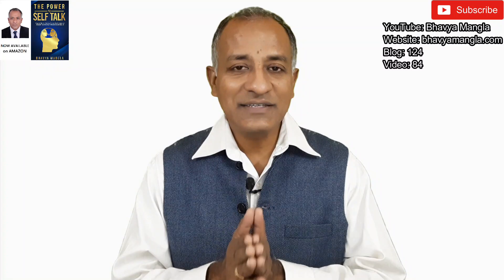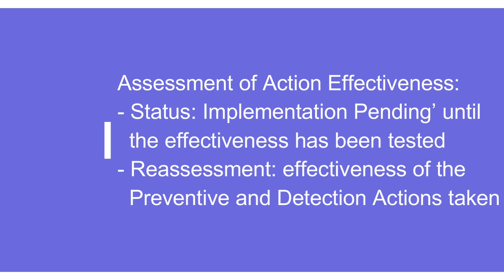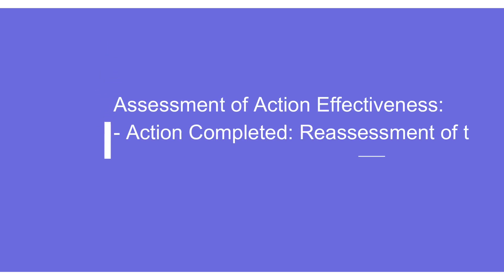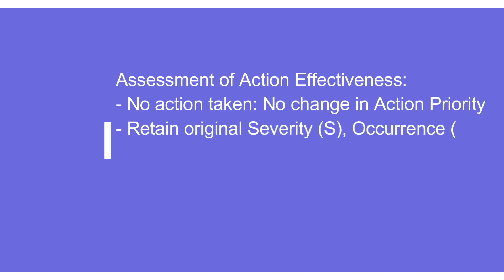Once actions are taken, it is important to assess their effectiveness. Until an action is completed it should remain in 'implementation pending.' Reassessment should be based on the effectiveness of the preventive and detection actions taken. Based on new occurrence and detection ratings, the action priority needs to be reviewed — maybe it was high but has now become medium or lower. Wherever no action is taken, the action priority should always remain the same.